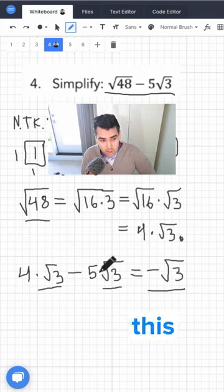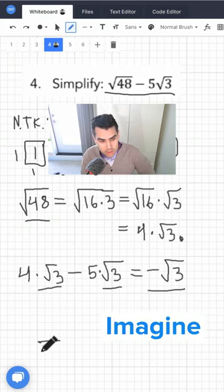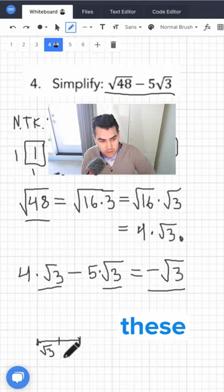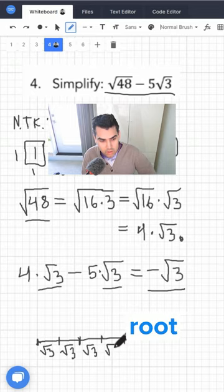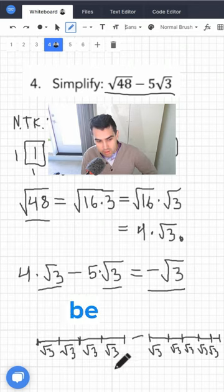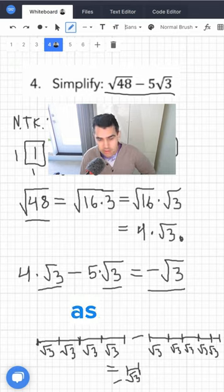If you have trouble with this part, you can think about it like this. Imagine this is the length square root of 3 and you've got 4 of these. Square root of 3, square root of 3, square root of 3. And then you're subtracting 5 of these. Then you're going to be left with minus square root of 3. And this is the final answer.